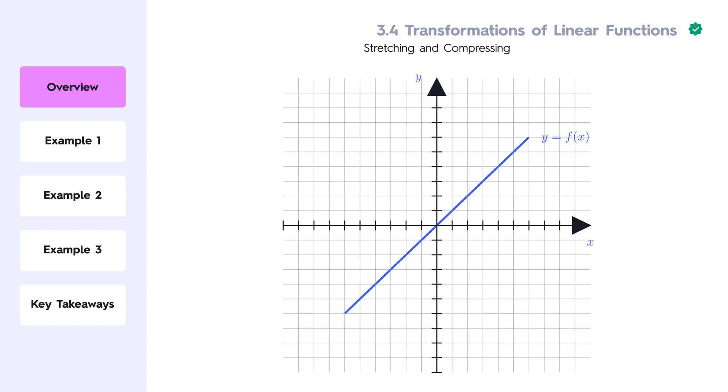Stretching and compressing: Stretching or compressing a linear function changes how steep or flat the line appears by multiplying the function by a constant. Vertical stretch: When we multiply the function by a constant a, y equals a times f of x, the line becomes steeper if a is greater than 1.